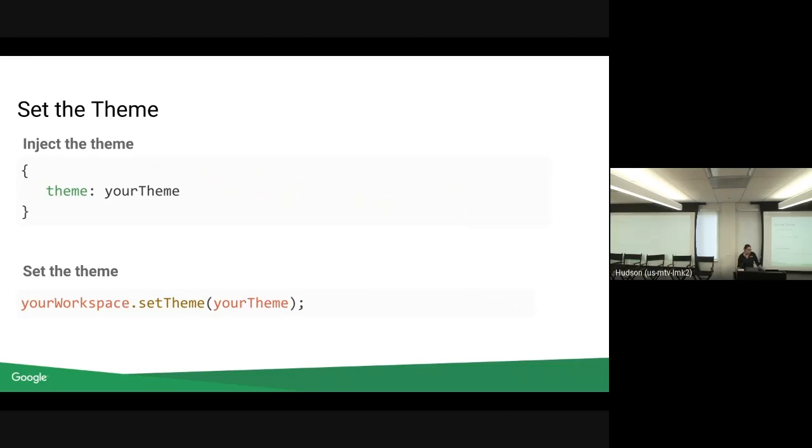There's two ways to set the theme. You can either set the theme when you inject or you can set the theme on your workspace. This changed recently. So, if you're using themes before, it was blockly.settheme and now it's going to be on the workspace. That's something that you'll have to change. Otherwise, it might break things.